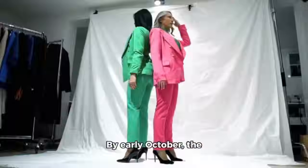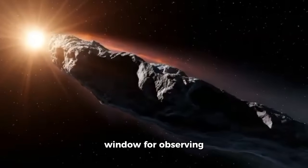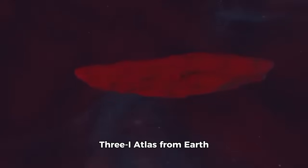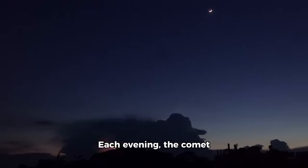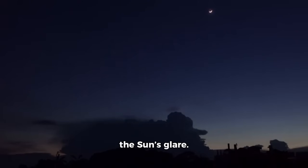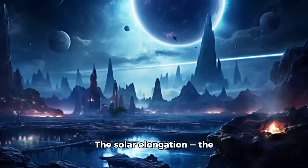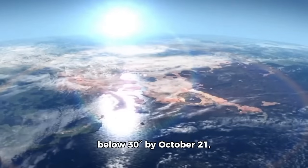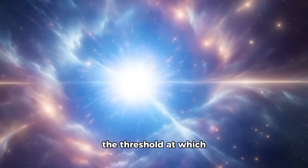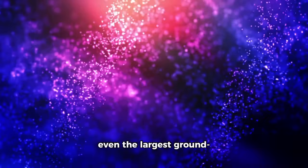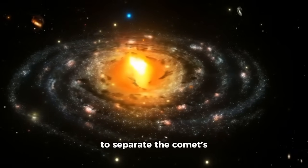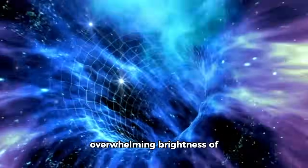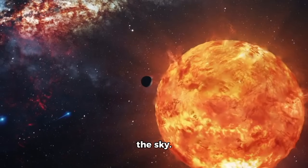By early October, the window for observing 3-I Atlas from Earth will be closing fast. Each evening, the comet dips lower into twilight, pressed ever closer to the sun's glare. The solar elongation, the angle separating the comet and the sun, shrinks below 30 degrees by October 21st, the threshold at which even the largest ground-based telescopes struggle to separate the comet's faint light from the overwhelming brightness of the sky.